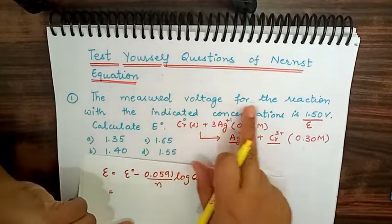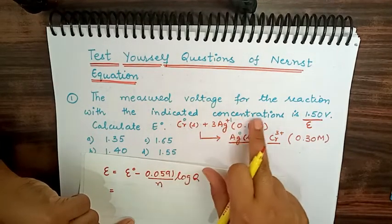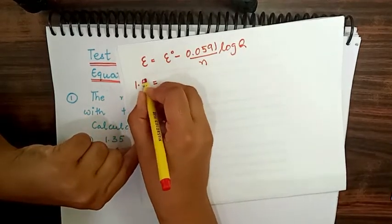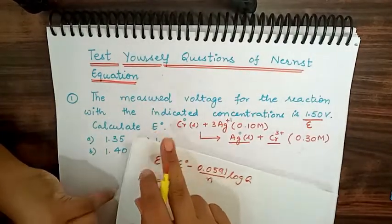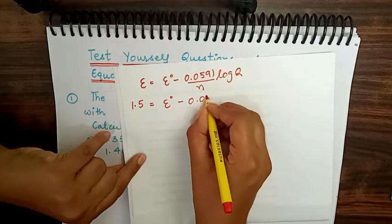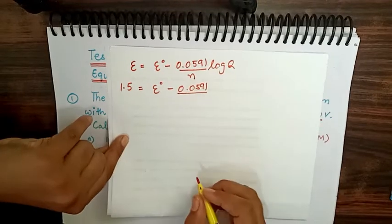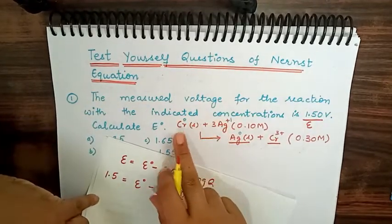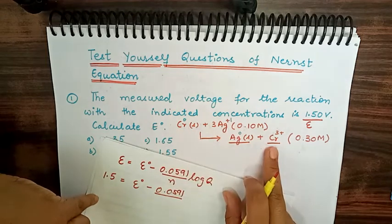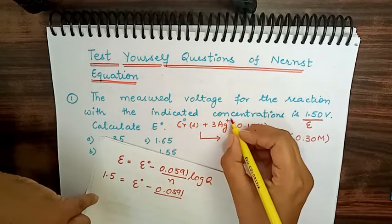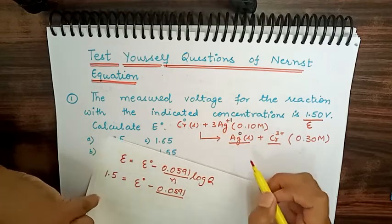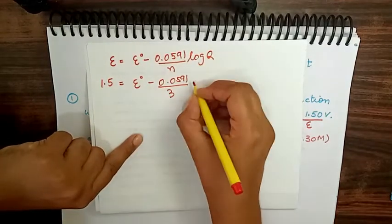The measured voltage E is given as 1.5 V; we need to find E°, the standard value. For n, we count electron changes: Chromium goes from 0 to +3, losing 3 electrons; Silver goes from +1 to 0, gaining 1 electron; total electron change n = 3.